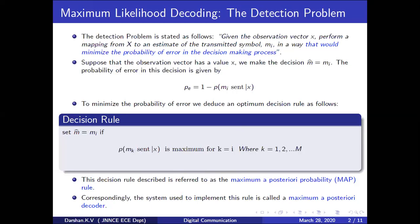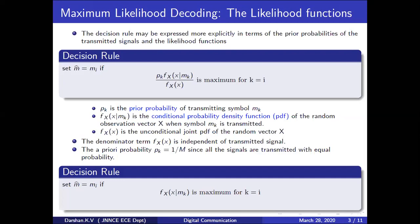So this was discussed in the earlier class. Additionally, what was done to the previous decision rule was that probability would be expressed in terms of likelihood functions. Likelihood function means, in other words, conditional probability density function, which is read as fX of X given MK. Now the decision rule has been written in terms of conditional probability density function. The condition is given MK, and you are calculating fX of X — that is the probability density function.